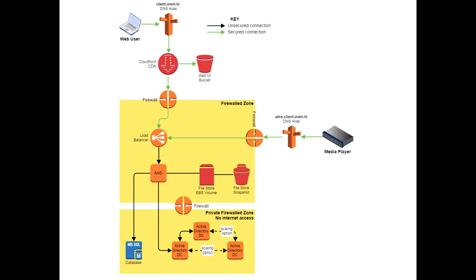On the network we have media players — potentially hundreds of thousands — polling the server every few seconds asking for new content. When someone publishes a new 500 MB video, suddenly 200 boxes download it. The next step is to route this through the CDN so we can cache it for five to ten minutes. The issue is the AMS currently decides whether a player is allowed to see a file. Once cached, anyone with the URL could access it — but Amazon has signed URLs: you generate a URL active for the next 90 seconds, after which no one can use it.